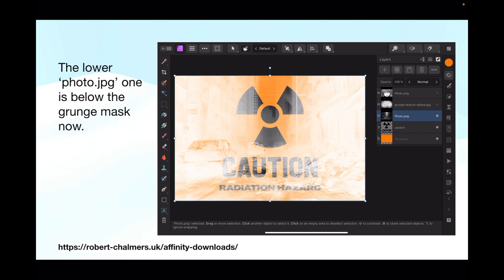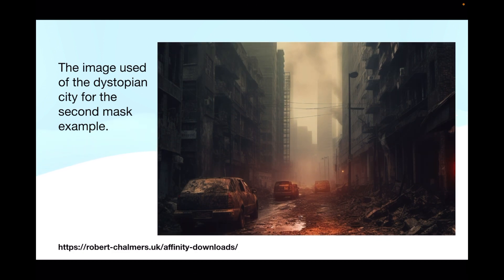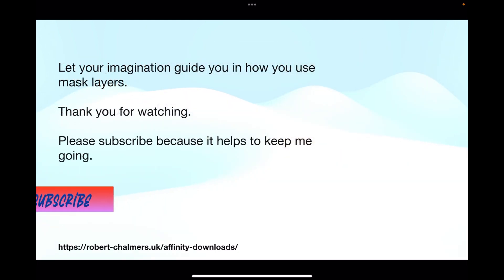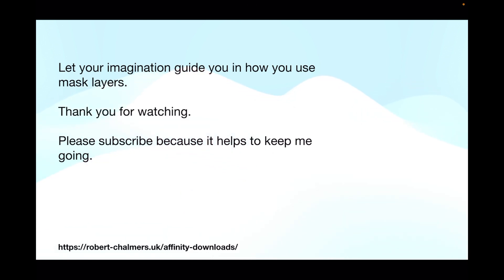The lower photo JPG is below the grunge mask. I've turned off the photo mask and the grunge mask, and only the new photo one is in place. You've got the caution sign and the orange layer, and you can see it reflects through. This is the dystopian city image used for the second mask example. Let your imagination guide you in how you use mask layers. Thanks for watching — please subscribe, it helps keep me going. See you in the next exercise.